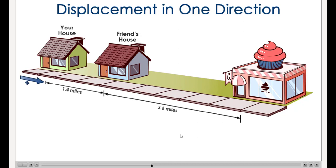After a short visit, you ride back to your house. In this example, what does the arrow represent? The answer is displacement. The arrow represents the distance and direction of the bike rider from the starting position at your house.